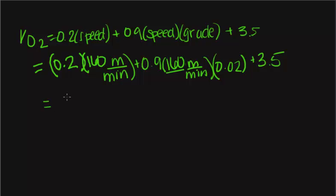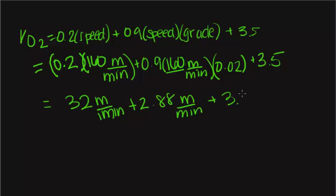When we do the calculation, this comes out to 32 meters per minute plus 2.88 meters per minute plus 3.5, giving us a total VO2 uptake of 38.38. The units for VO2 uptake are milliliters of O2 per kilogram minute.